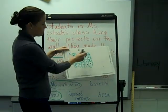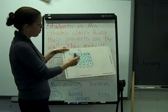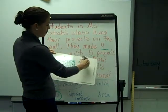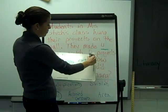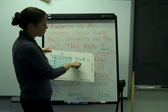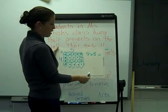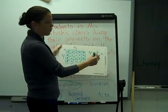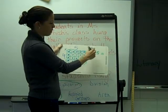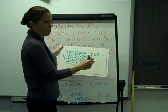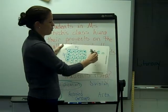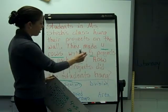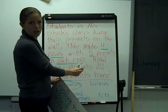You can either count each individual dot or do 4 times 5. If you're not sure what 4 times 5 is off the top of your head, you can count all the dots, or count by 5s 4 times, or count by 4s 5 times: 4, 8, 12, 16, 20. So the answer to this one is 20 projects were hung.